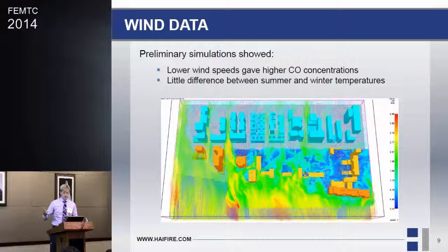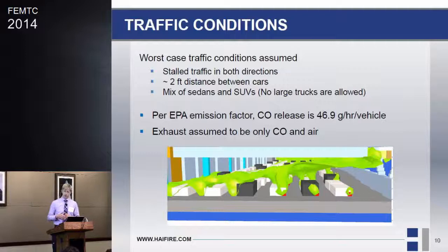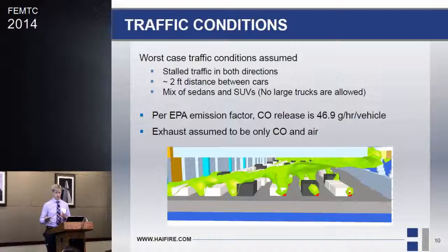We also looked at summer and winter temperatures — around 30°C and 0°C — and found little difference between the two. This also makes sense since the exhaust comes out at about 300°C, so a 30°C ambient difference isn't going to make much difference in buoyancy. Having a fairly large cluster, we could run several scoping runs concurrently and evaluate what we needed to look at further.